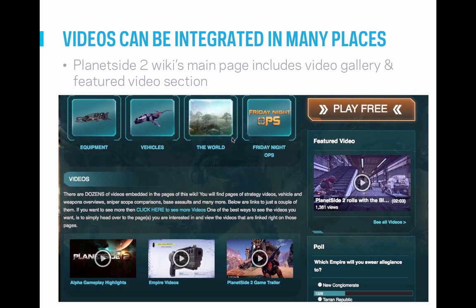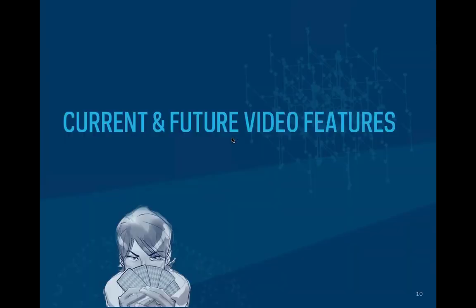Videos can be added to any wiki page. Depending on your wiki, this may mean on a character page showing their top quotes, on a season page showing the highlights from every episode, or on a user page to showcase your favorite videos. Here's an example from the Planetside 2 wiki, where they feature a video on their main page along with a video gallery. Yoko is now going to walk us through the current video products and offer a sneak peek of what we're working on, followed by a Q&A.